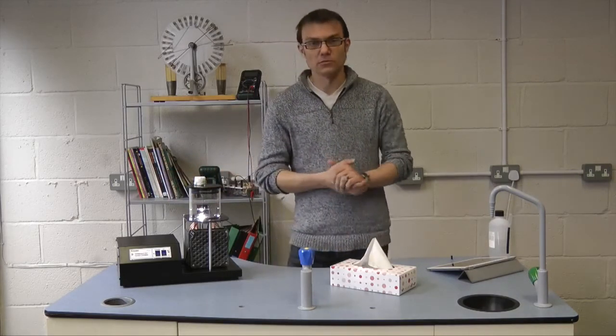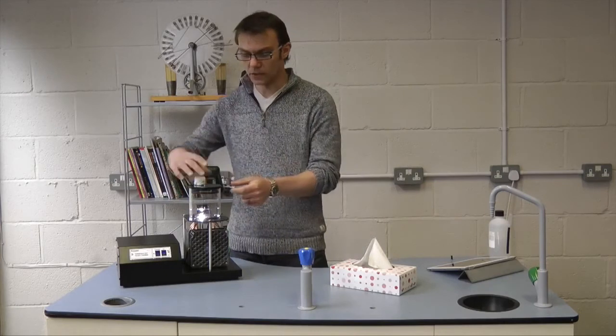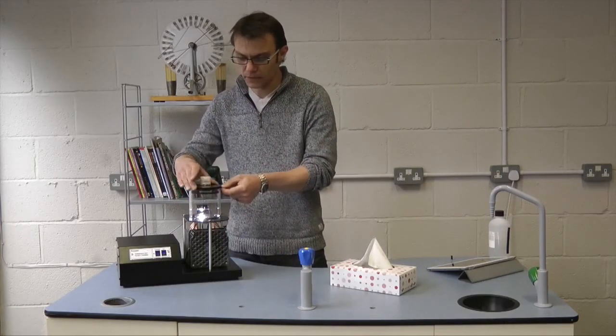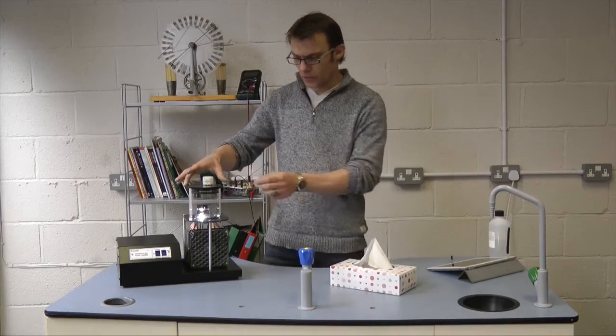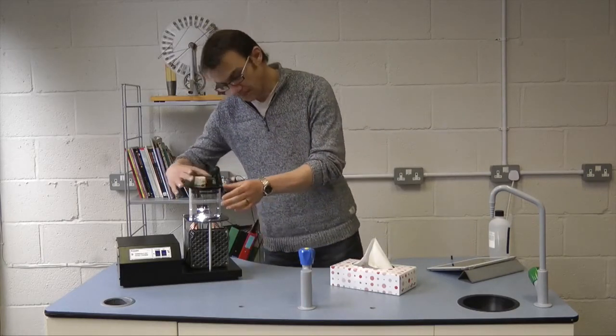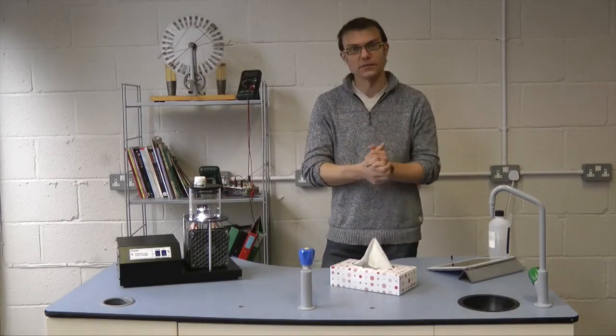It can be made to run as long as you'd like by occasionally topping up the alcohol while it's running. Simply rotate the lid, add more alcohol again with the pipette until the felt is wet and re-close and the unit can be made to run all day using this method.